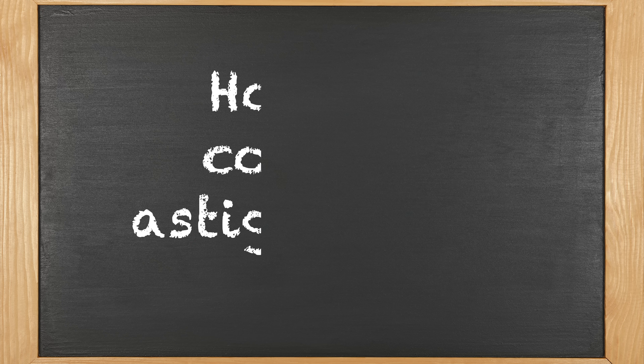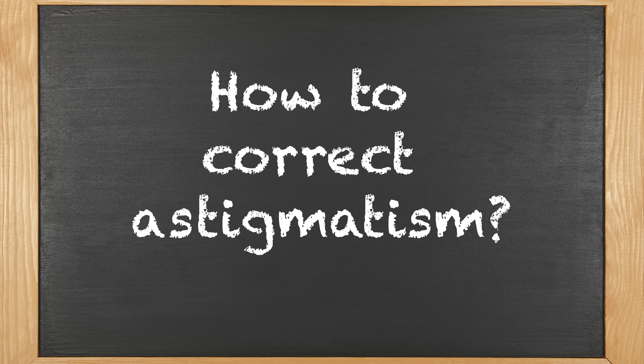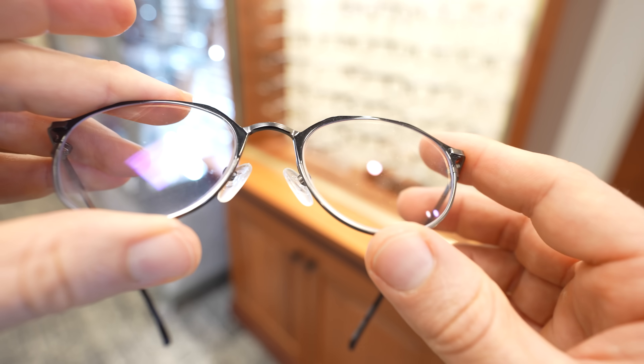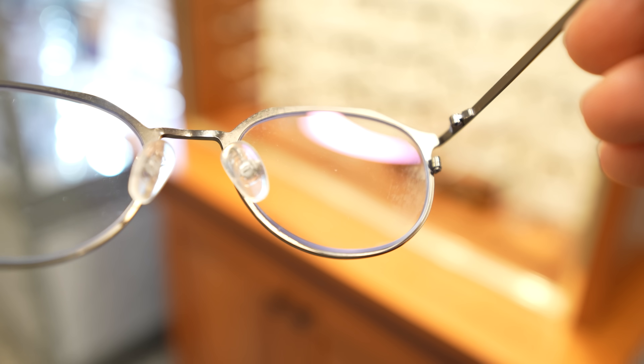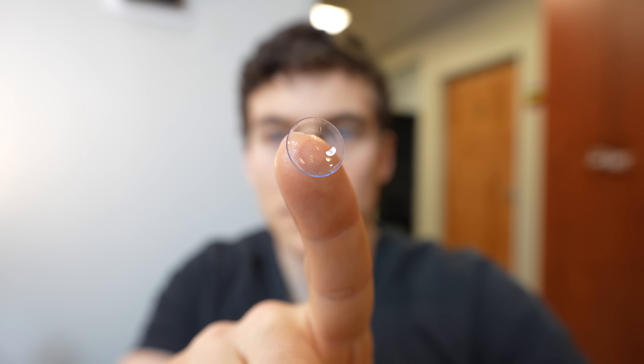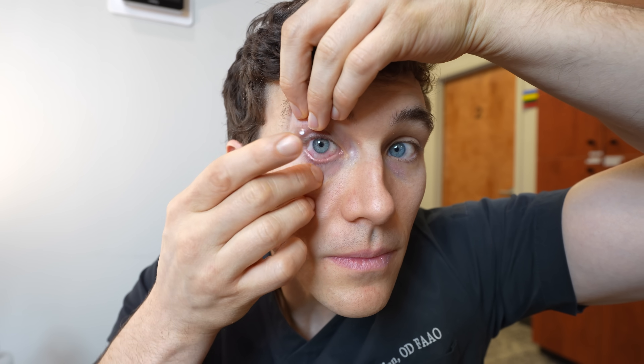So how do we correct for astigmatism and help improve your vision? Thankfully, most cases of astigmatism can easily be corrected with a simple glasses prescription. One bonus tip: when buying glasses for astigmatism, because the lenses often have multiple curves on them, you want to get something that has an anti-reflective or anti-glare coating — that'll help cut down some of the glare you may experience. Despite what some people may have heard, astigmatism can be corrected with contact lenses. In fact, most soft contact lenses now do correct for some level of astigmatism.